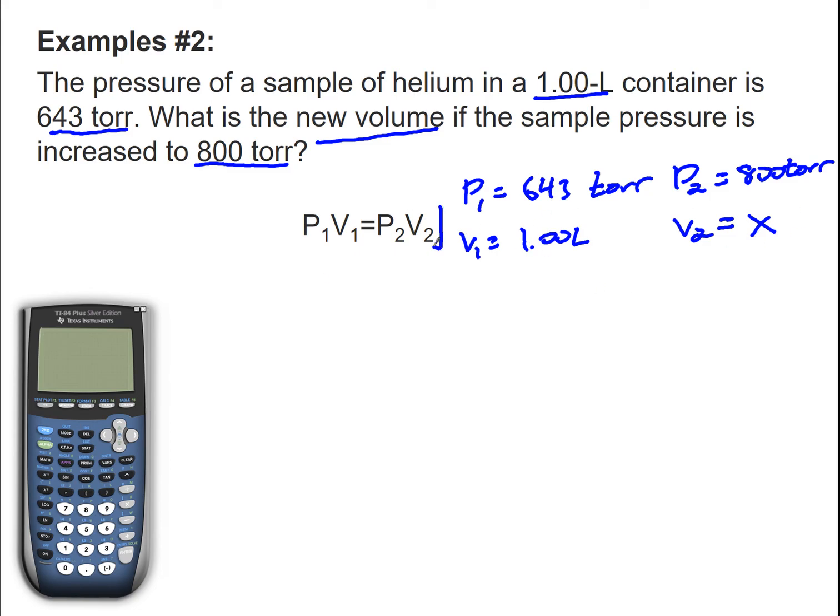I need to isolate V2 from this expression. So in order to do that, I divide both sides by P2. P2 will cancel out. I'm left with P1 times V1 divided by P2 equals my V2, so I'm ready to plug in all my numbers.